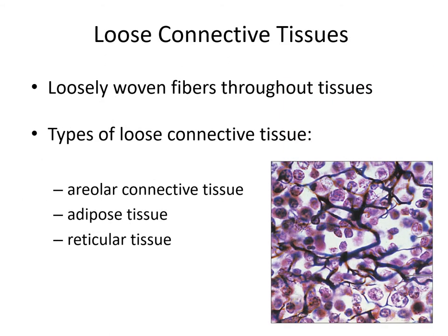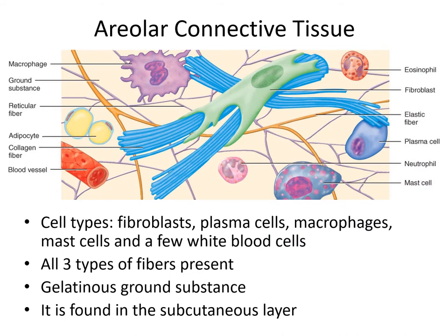Loose connective tissue has a gelatin-like ground material with fibers woven throughout in a web or network. We have three different types: areolar connective tissue, adipose connective tissue (fat cells), and reticular tissue. Areolar connective tissue contains all three types of fibers — reticular, collagen, and elastic fibers — and has a good blood supply, with capillaries that can leak out white blood cells to wander around within this tissue.